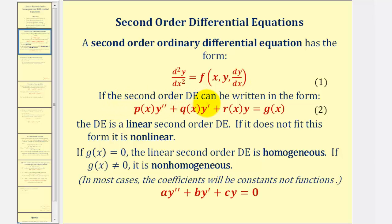If the second order differential equation can be written in this form here, where we have a function of x times the second derivative, plus a function of x times the first derivative, plus a function of x times y equals g of x, then the differential equation is a linear second order differential equation. If it doesn't fit this form, then we say it's nonlinear. And if g of x, the function on the right, is equal to zero, the linear second order differential equation is homogeneous.